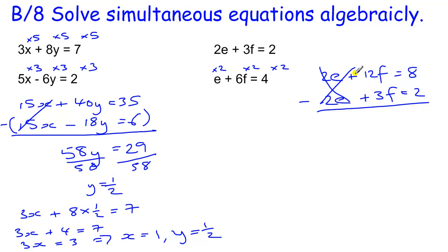When I subtract those two the e's disappear. I have got 12f to take away 3f which is 9f, and I have got 8 to take away 2 which is 6. So that tells me f equals 6 over 9 or 2 thirds.